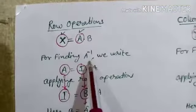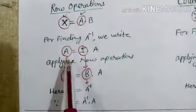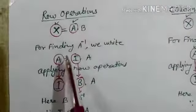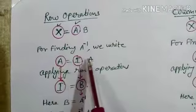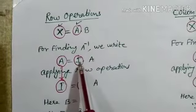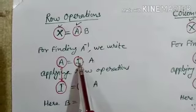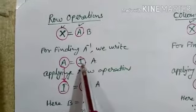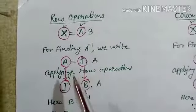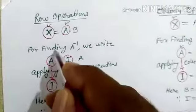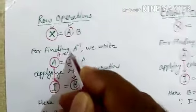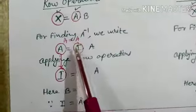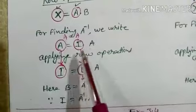For finding A inverse, we write A equals I into A, because A multiplied by the identity matrix I has no effect, so A equals I·A. Both are equal.